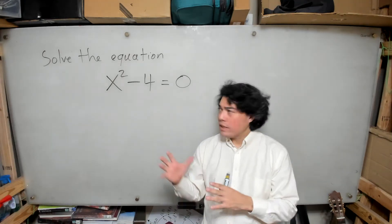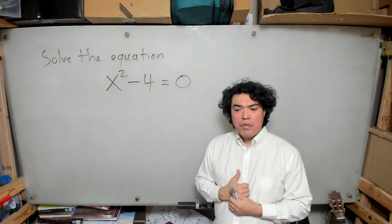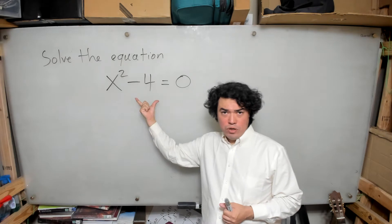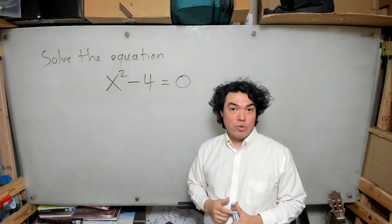So now we're going to look at this equation here, x squared minus 4 equals 0. This equation has only one square term and one number, so it will be amenable to solution by taking square root.